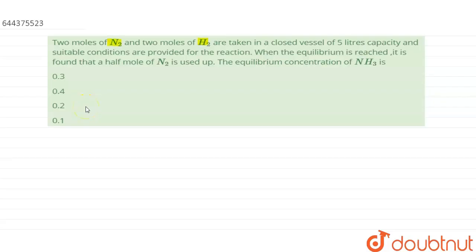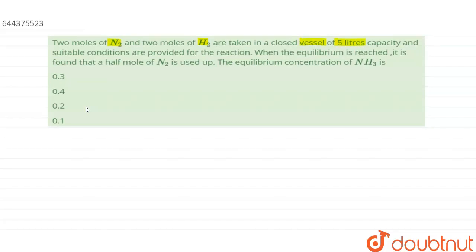moles of N2 and two moles of H2 are taken in a closed vessel of five liter capacity and suitable conditions are provided for the reaction. When the equilibrium is reached, it is found that half mole of N2 is used up. The equilibrium concentration of NH3 is—we have to find out the equilibrium concentration of ammonia.